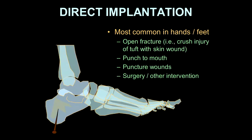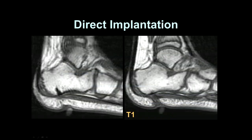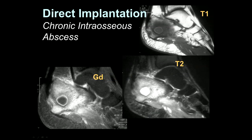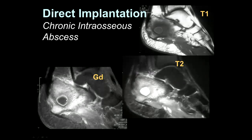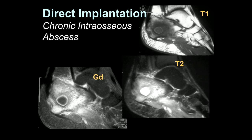Direct implantation can also occur, especially in the hands and feet — open fractures in the fingers, a punch to the mouth with inoculation of the tendon sheaths, puncture wounds of the lower extremity, and also after surgery or other interventions. Here's an example of direct implantation: a young patient stepped on a nail, and here is the tract of the nail extending into the calcaneus. Here's a patient who developed an abscess after stepping on a nail many years ago. These infections can get walled off and become chronic and indolent, reoccurring periodically as the body's defenses are challenged.